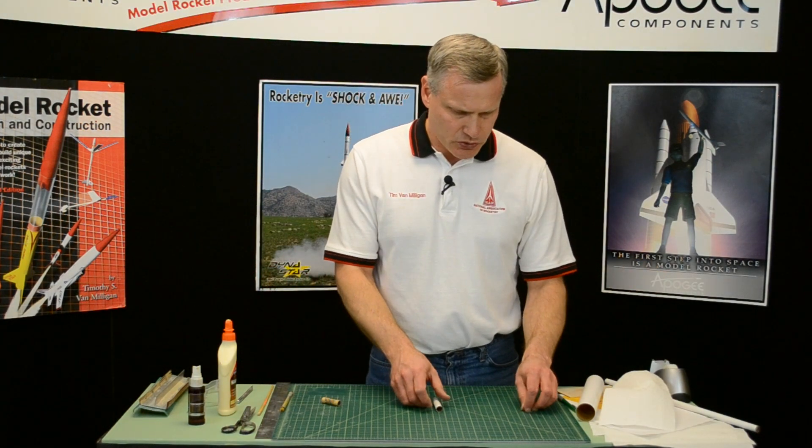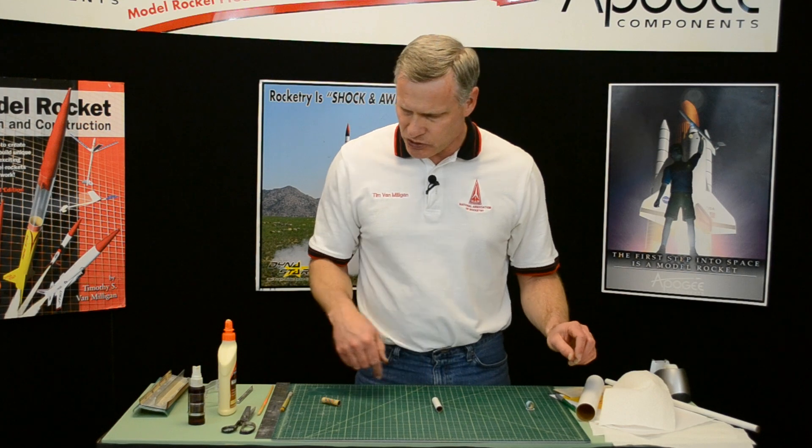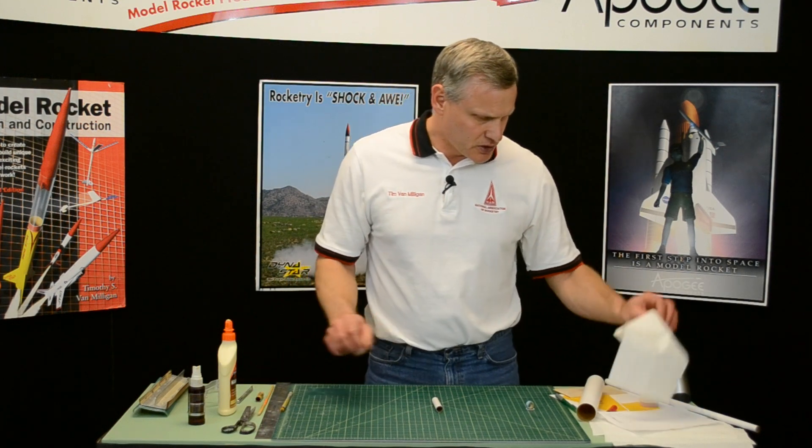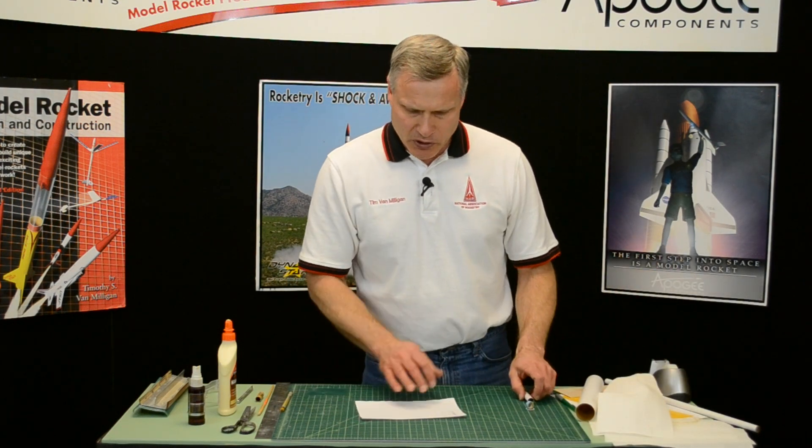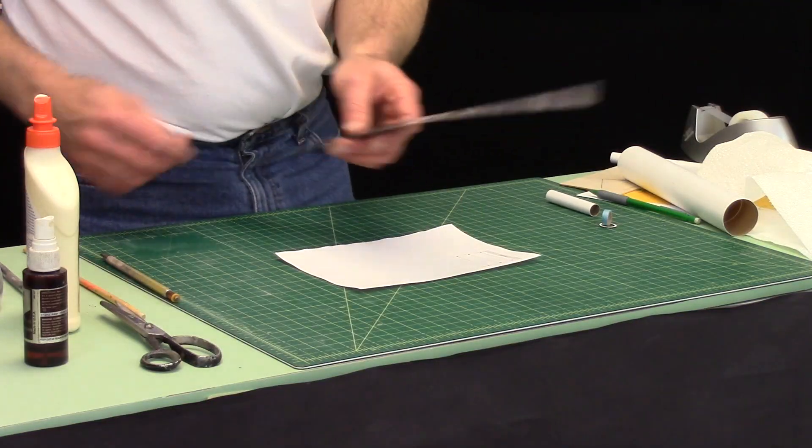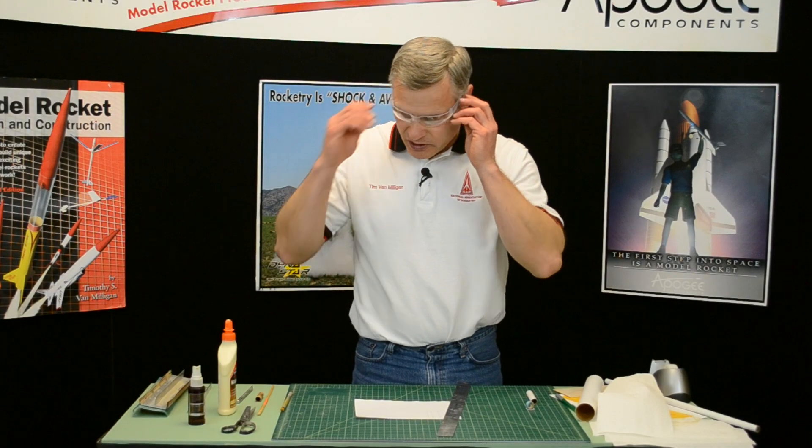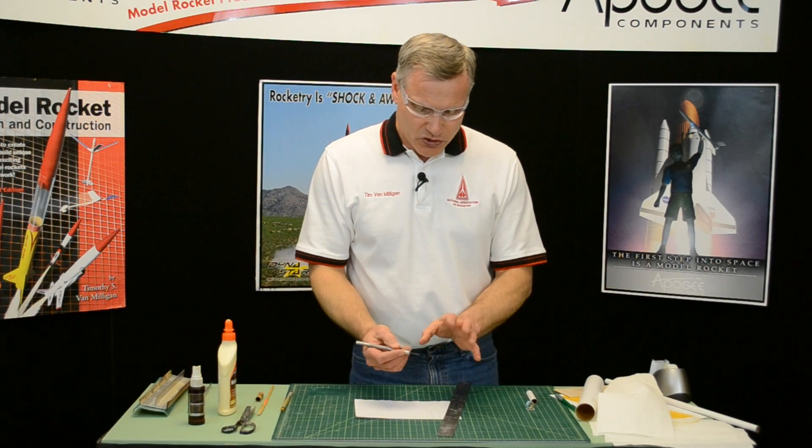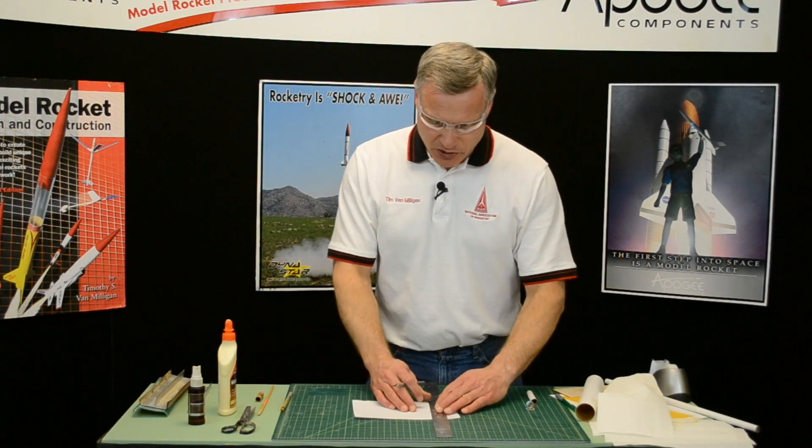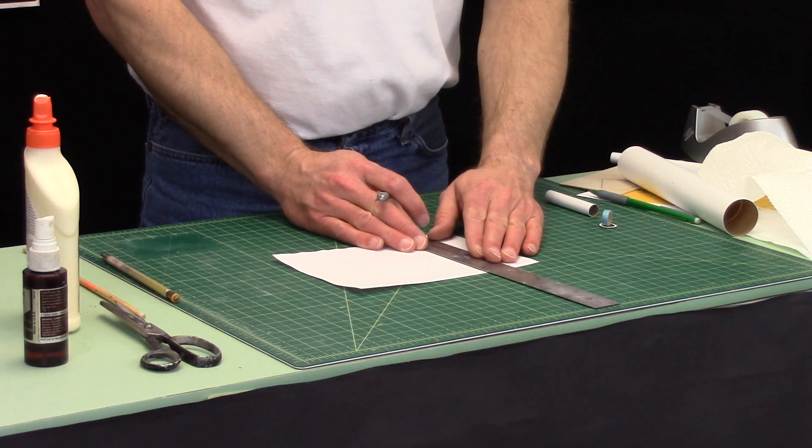Next, we want to put three lines on the tube for our fins. So I'm going to take my fin marking guide sheet right here, and I'm going to cut it out. I'm going to use a hobby knife for this, so that's why I'm going to wear safety glasses. Because you don't want to chip your blade and have a piece go into your eye, so always use safety glasses.